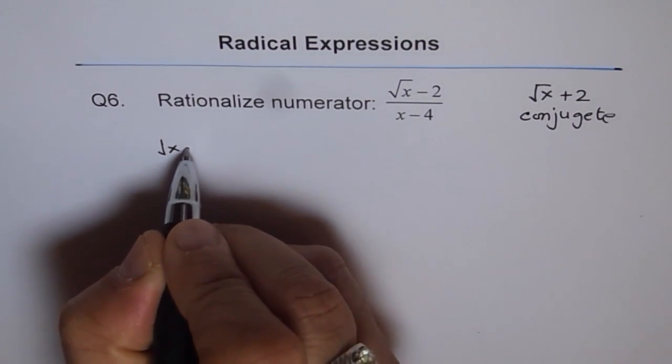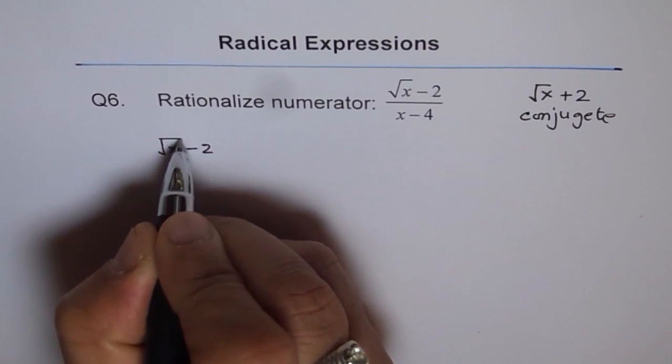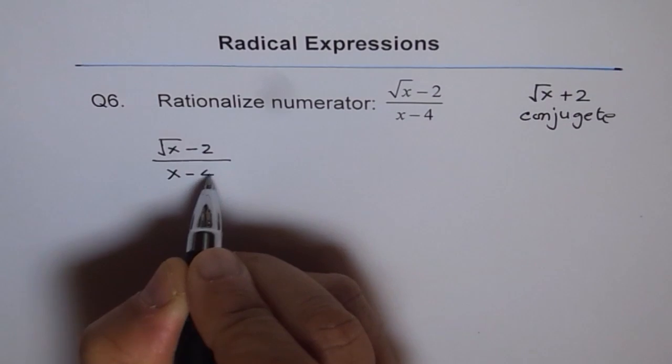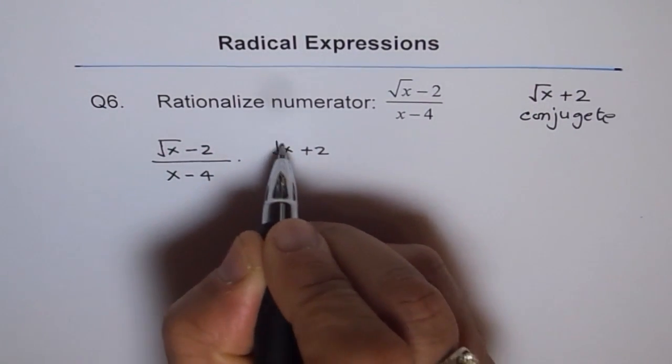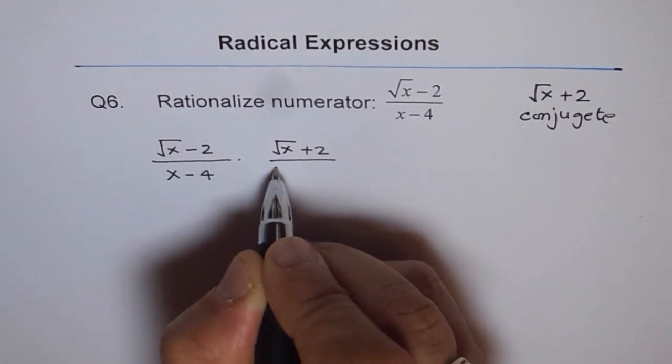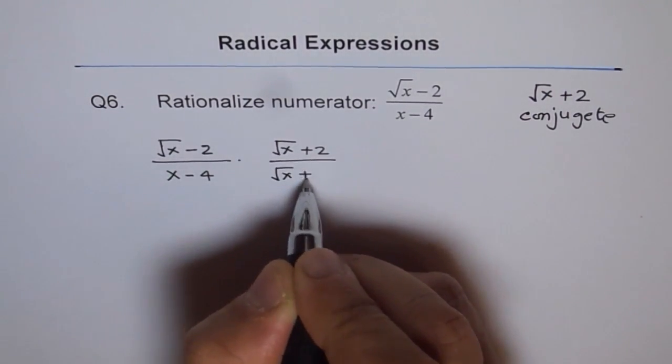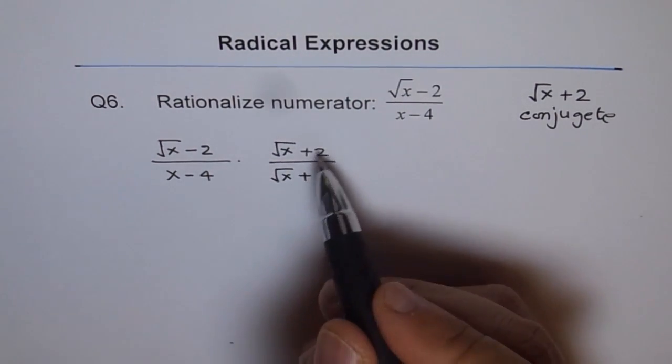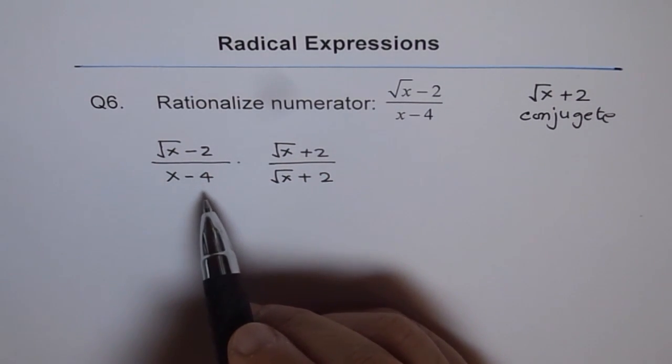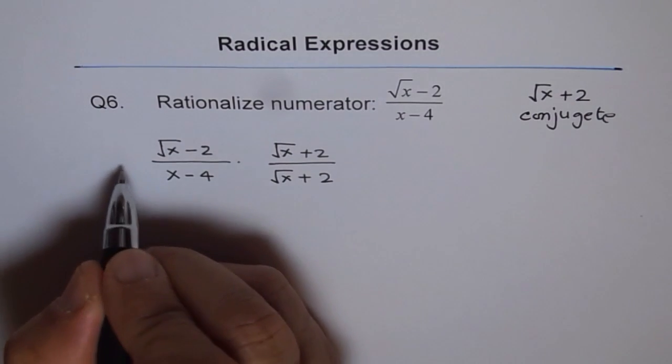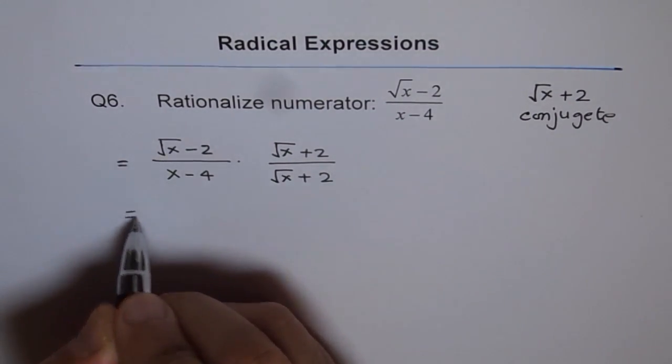The question here is square root x minus 2 divided by x minus 4. So we will multiply by square root x plus 2 divided by square root x plus 2. That is as good as multiplying by 1. It really does not change anything in our given expression. This is the given question.